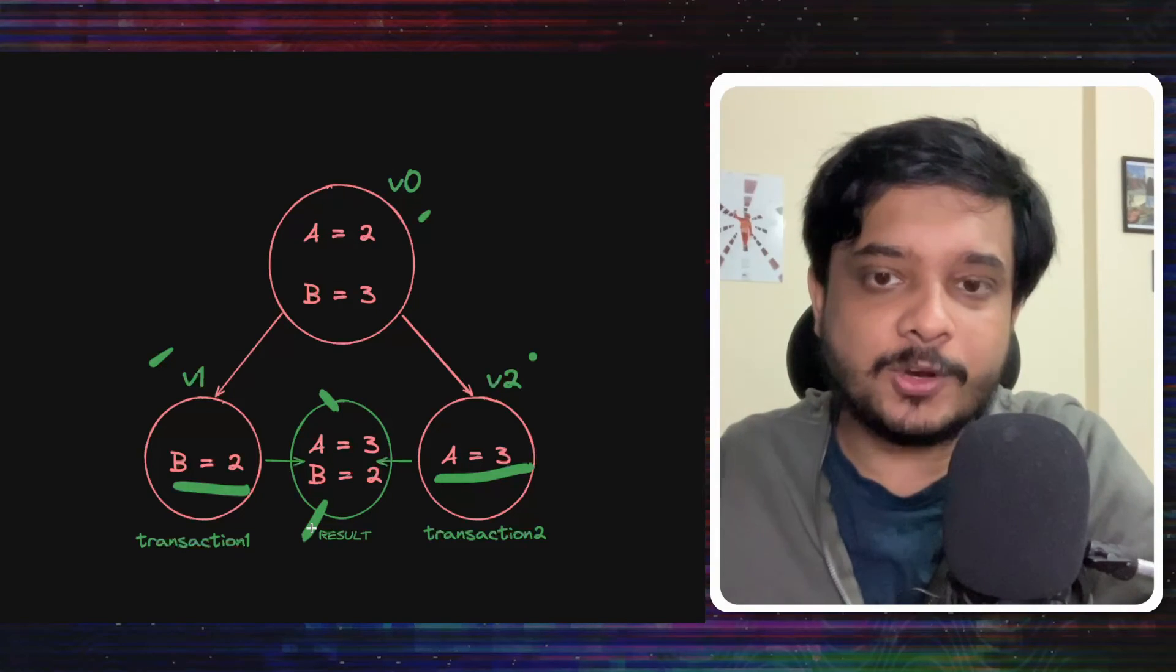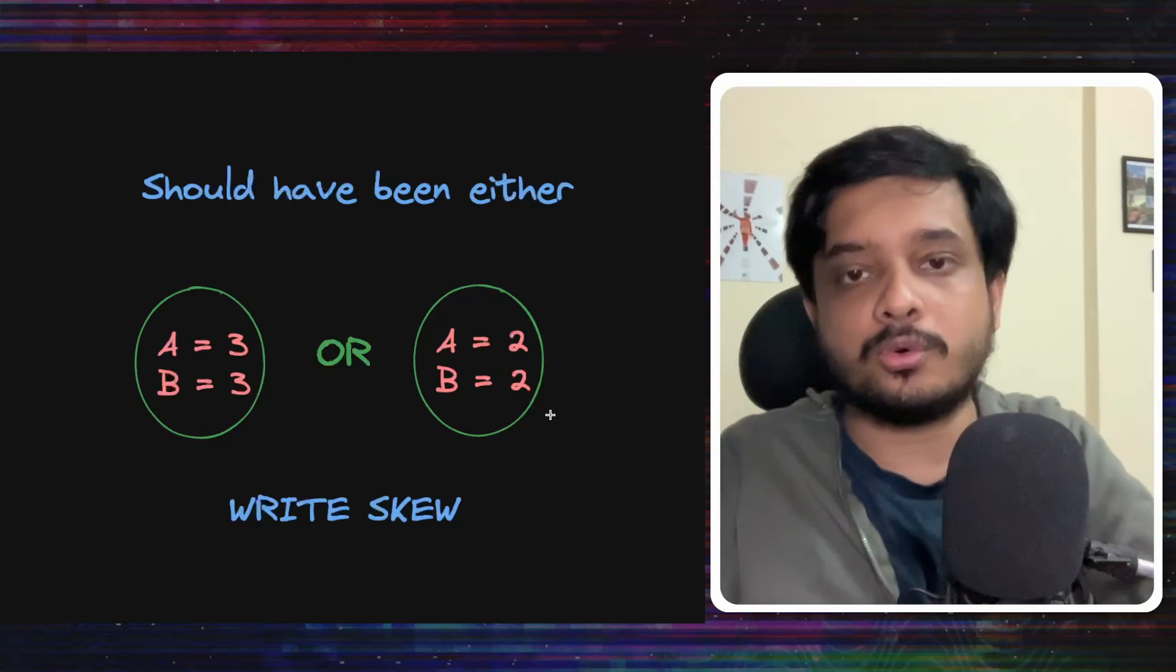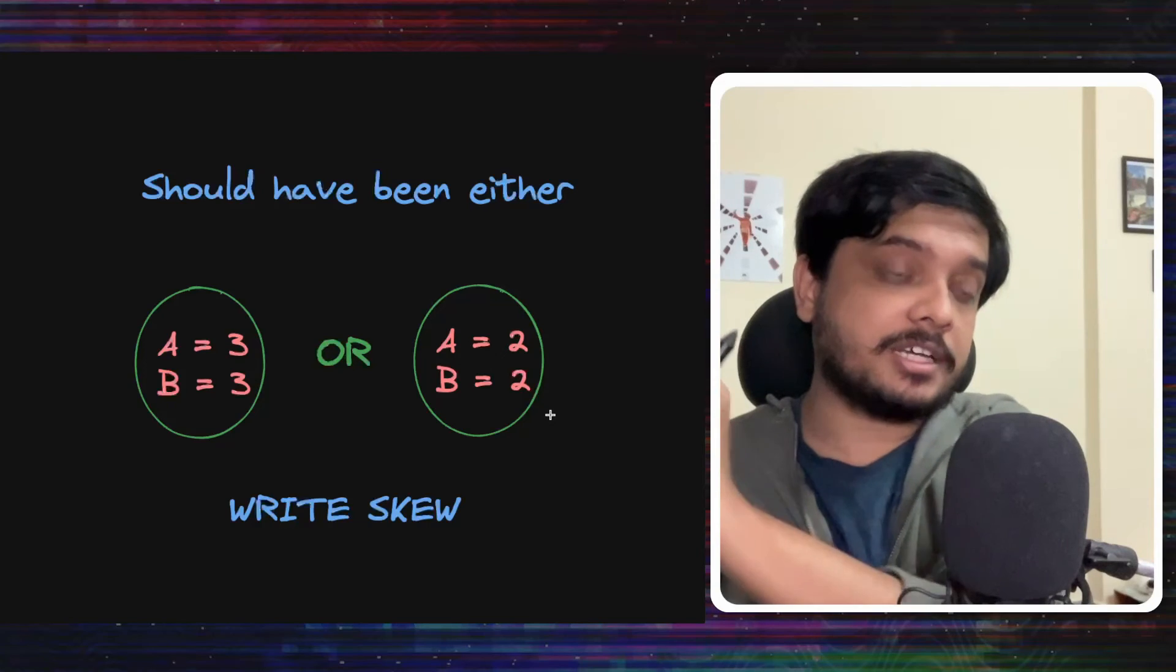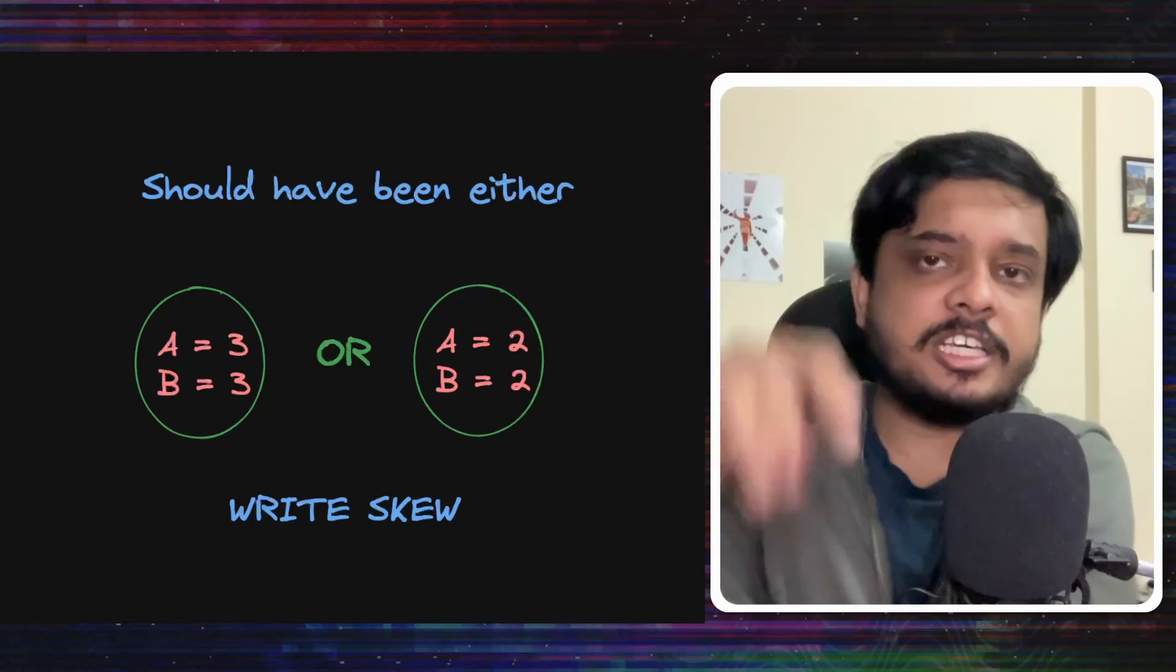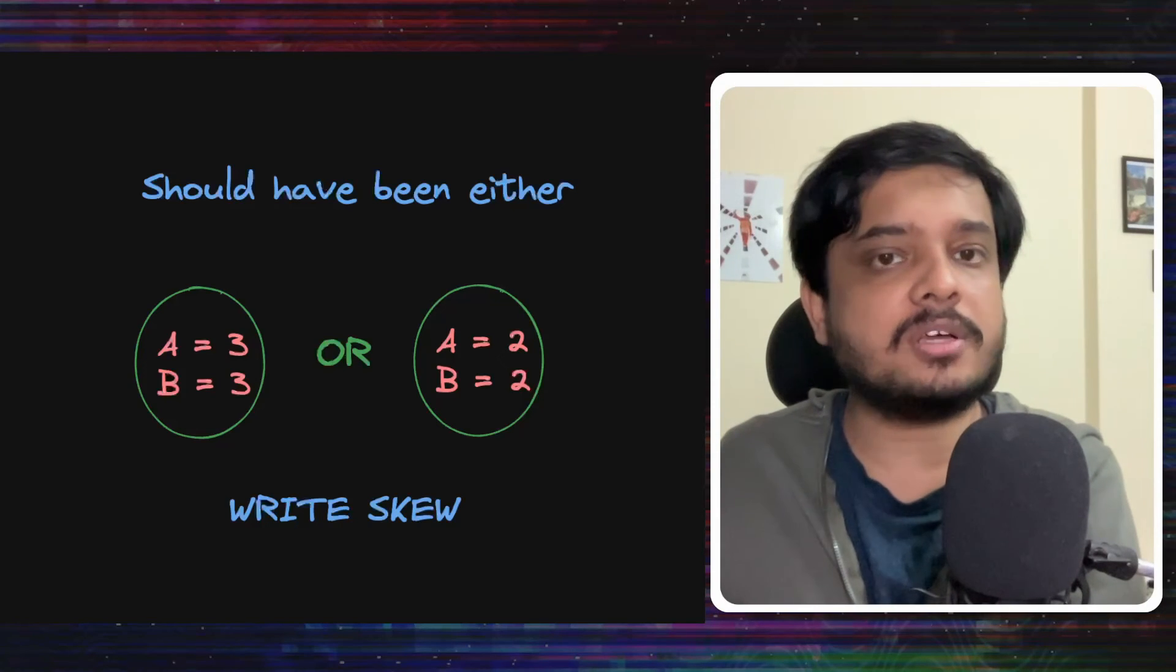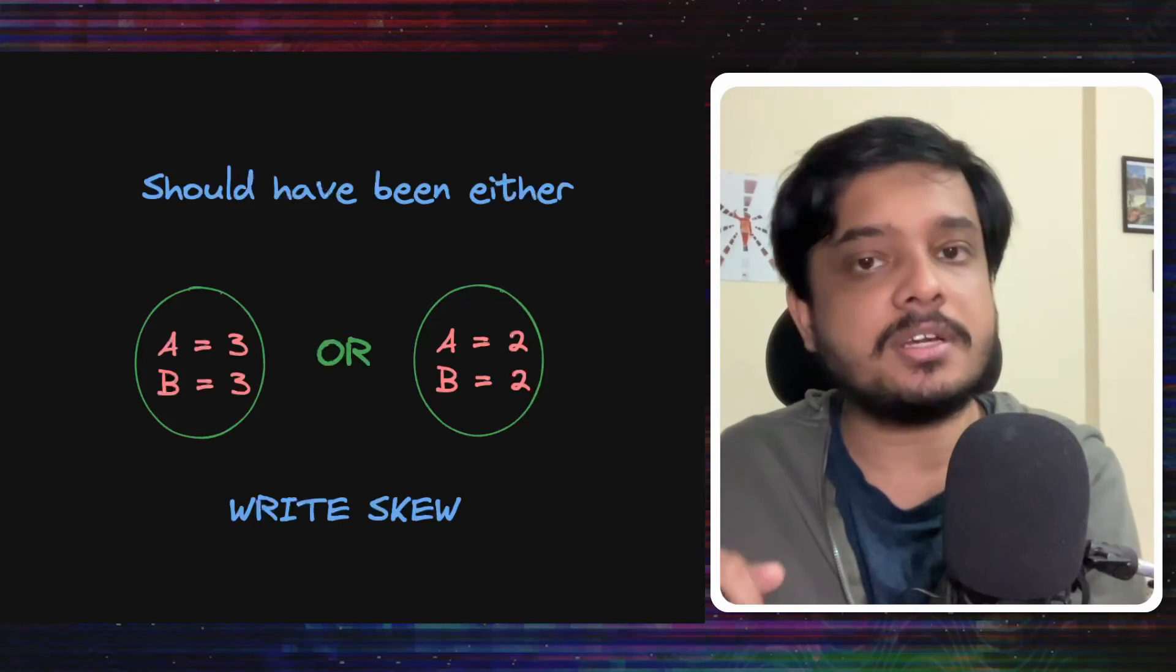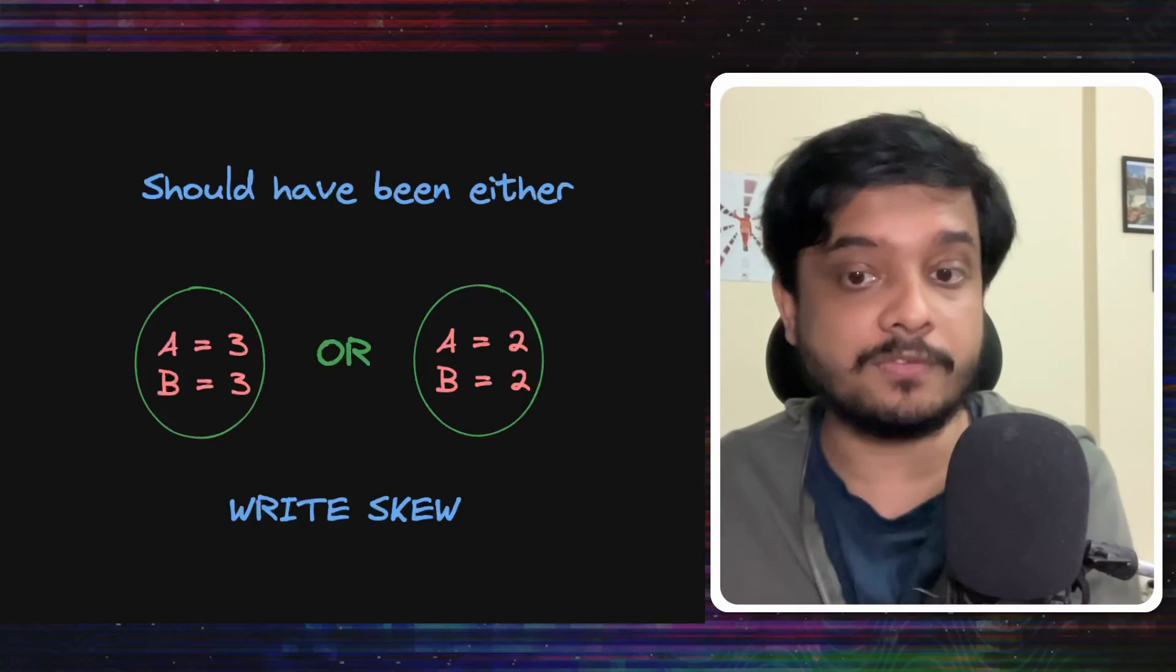This is something that we don't want. It should either have been 3, 3 or 2, 2. Because if one transaction gets applied over the other transaction, it should be either 3, 3 or 2, 2. Not the mix of both. This problem or anomaly is called the write skew. And it is happening because in MVCC, one transaction cannot control what the other transaction is doing with its own version of the data.